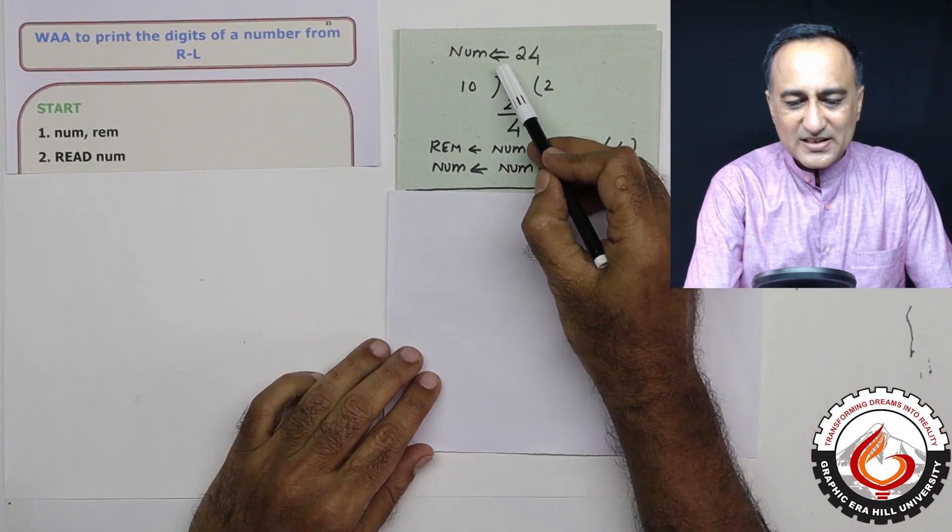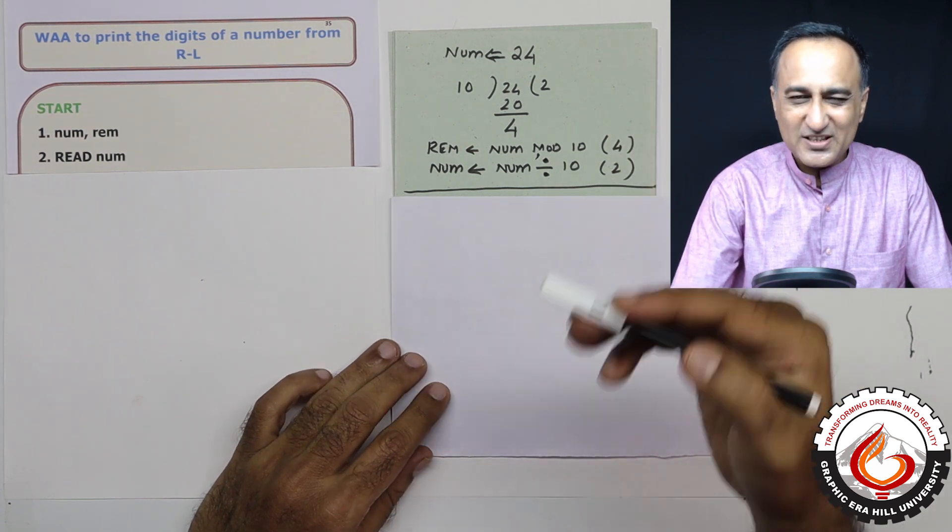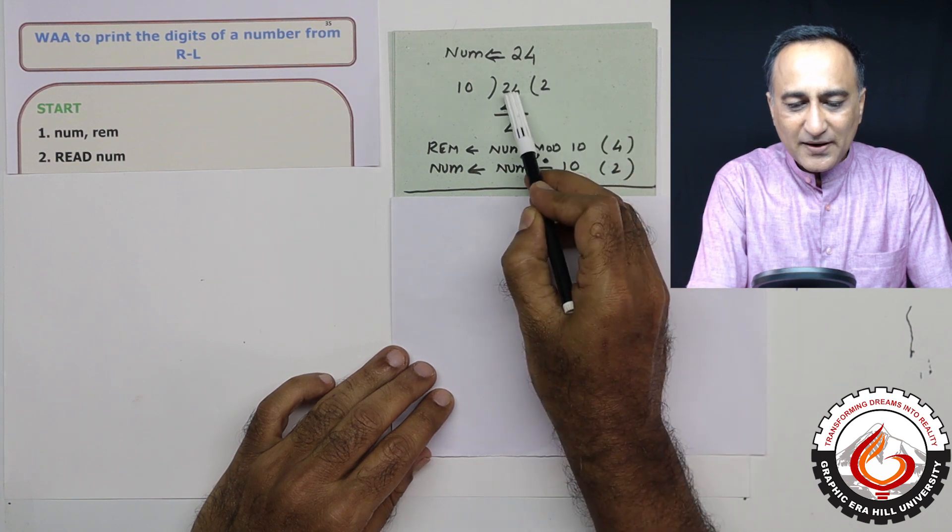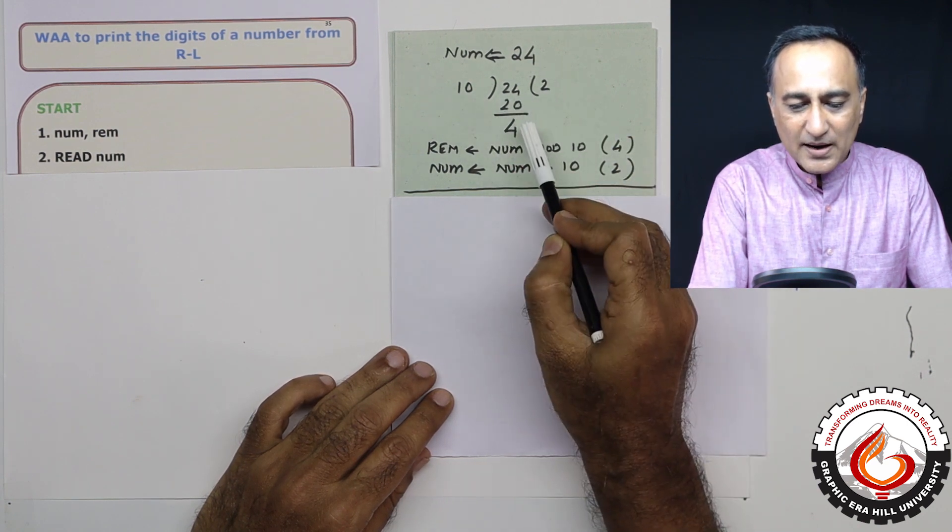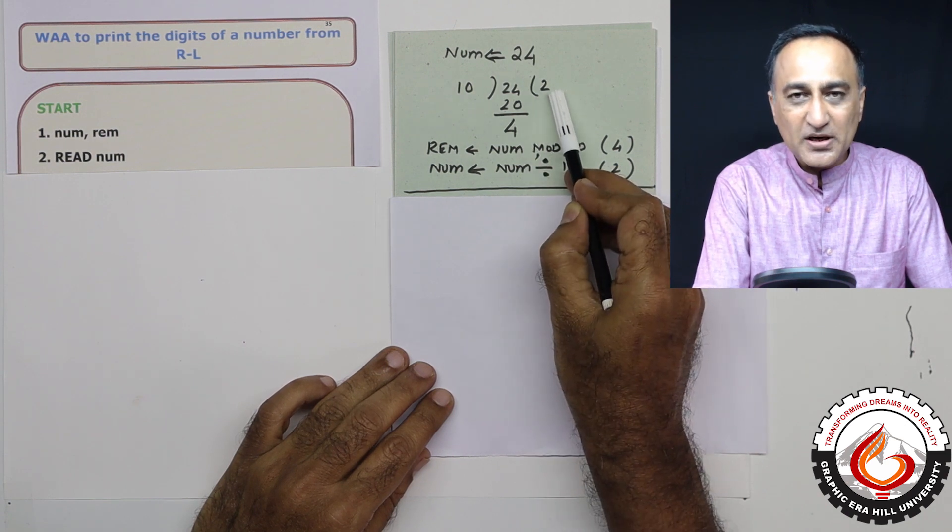Now let's say a number is 24. Let's first understand how this works then it's really easy. Number is 24. If I take 24 and divide by 10, I am going to get the remainder as 4 and the quotient happens to be 2.